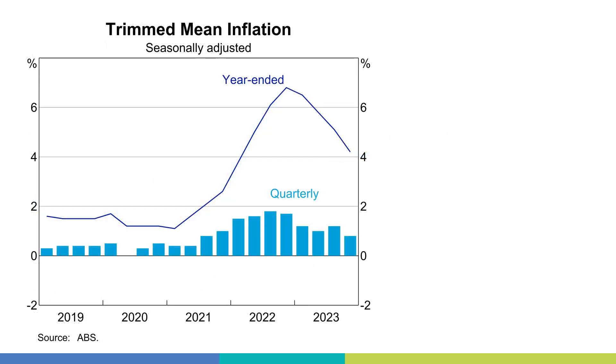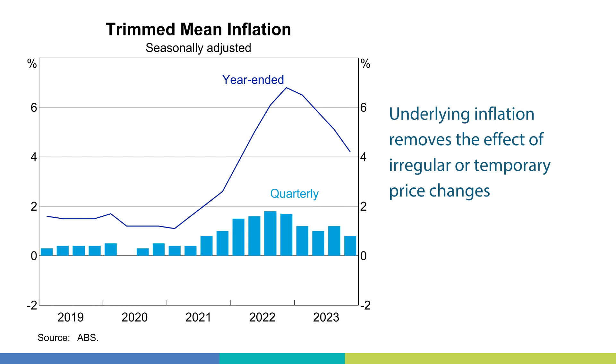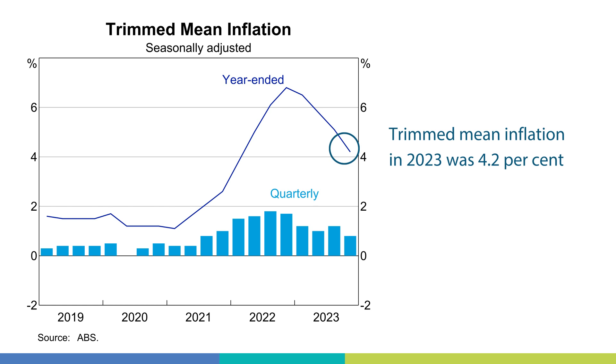Turning to measures of underlying inflation, which remove the effect of irregular or temporary price changes, we have further evidence of an easing in overall inflation in the December quarter. For example, trimmed mean inflation was 0.8% in the December quarter and 4.2% over the year, down from 5.1% over the year to the September quarter. While there are encouraging signs, the economic outlook is still highly uncertain. The RBA's central forecasts are for inflation to return to the target range of 2–3% in 2025 and to the midpoint in 2026.